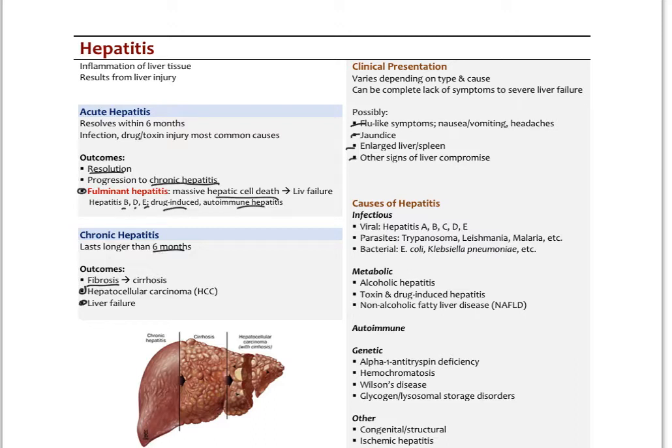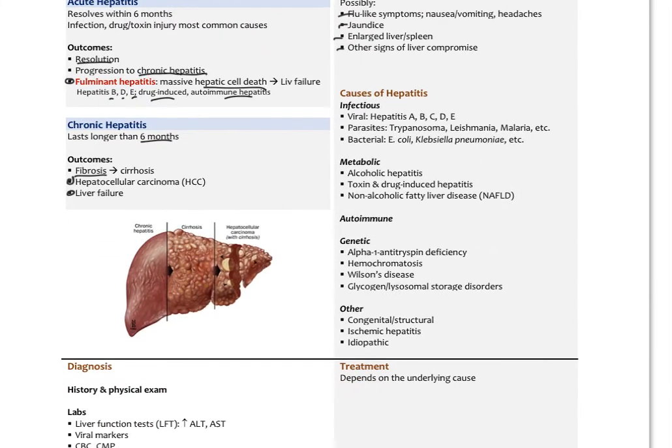The causes include infectious hepatitis viruses A, B, C, D, and E. There are parasites, not common in the U.S., but if you work in Africa or overseas you might see trypanosomes, leishmaniasis, malaria can all induce hepatitis. Different bacteria like E. coli and Klebsiella are more typical in immunocompromised patients.